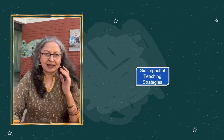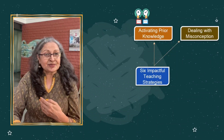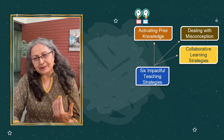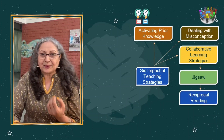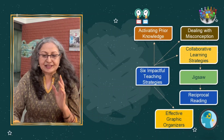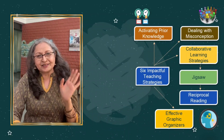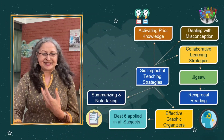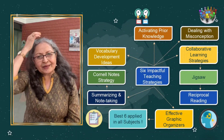We're beginning with what we call the six impactful teaching strategies. What are these six? We have activating prior knowledge, then there is dealing with misconceptions. Then of course the collaborative teaching strategies, in which we will speak about the jigsaw as well as reciprocal reading or reciprocal teaching. We will talk about effective graphic organizers — just six are good enough regardless of which subject you're teaching. Another strategy is summarizing and taking notes, where we will be introducing Cornell note-taking, as well as developing vocabulary regardless of the subject that you teach.